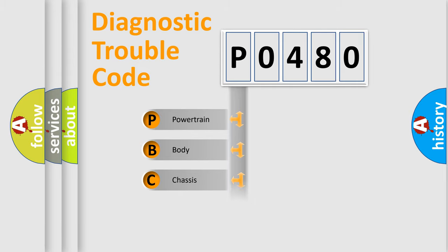Powertrain, body, chassis, network. This distribution is defined in the first character code.